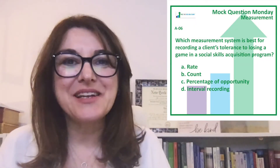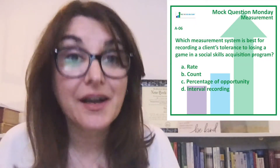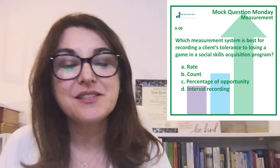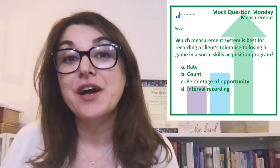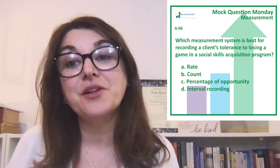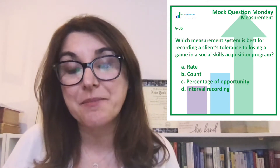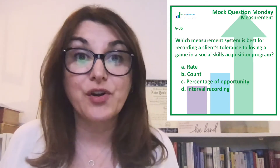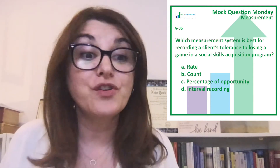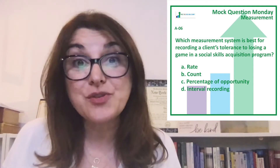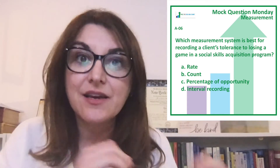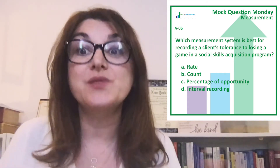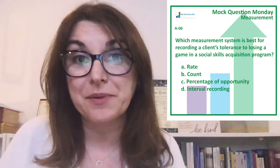Hi there, welcome to Mock Question Monday. This week we're talking about measurement, specifically percentage of opportunity, which is the best way to measure a restricted condition such as tolerating losing a game. You have to think of restricted conditions as SDs that allow for the occurrence of a particular response. What you're looking at is in every opportunity, every presentation of that SD — losing a game — how many of those opportunities were actually responded to with a problem behavior.